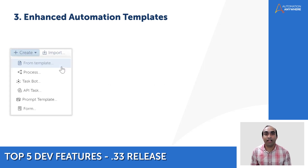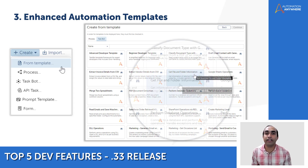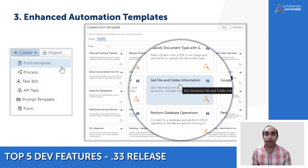Here's a quick walkthrough: log into your control room, go to the Automations tab, and click the Create button. In the dropdown, you will see the 'From Template' option. Click on that to see the full list of predefined templates available for both task bots and processes.